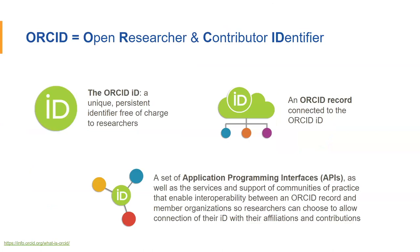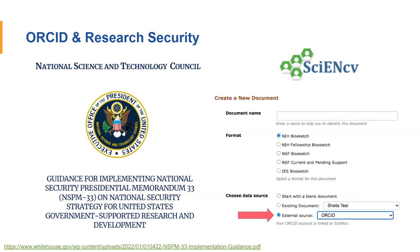We also have the ORCID API, or Application Programming Interface, which facilitates organizations, software systems, vendors, and platforms being able to connect and transfer data between the local system and individuals' ORCID records. This has been coming up a lot lately because ORCID is heavily referenced in a memo called the National Security Presidential Memo 33 or NSPM-33, which talks about research security and national security when it comes to federally funded research. As of right now, all of the federal funding agencies are required to come up with policies related to researchers having ORCID IDs.